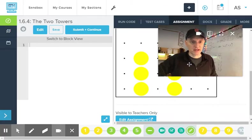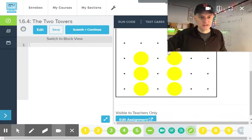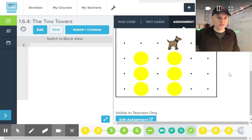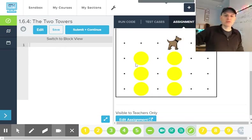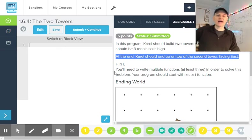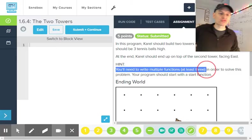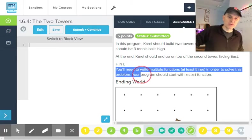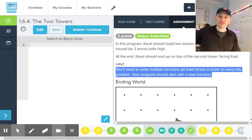Why am I always in the way here? If I go like this. Come on. There we go. So two towers, Carroll facing east. Hint, you'll need to write multiple functions, at least three, in order to solve this problem, and your program should start with a start function.